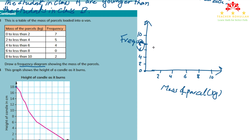Seven parcels weigh 0 to less than 2 kg, so I draw a bar reaching 7. Five parcels weigh 2 to less than 4, so the bar reaches 5. Four parcels weigh 4 to less than 6, bar reaches 4. No parcels weigh 6 to less than 8, so it is zero. Two parcels weigh 8 to less than 10, so the bar reaches 2. This is the frequency diagram drawn from the table.